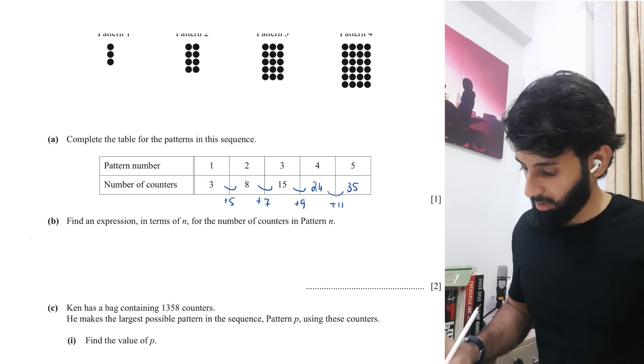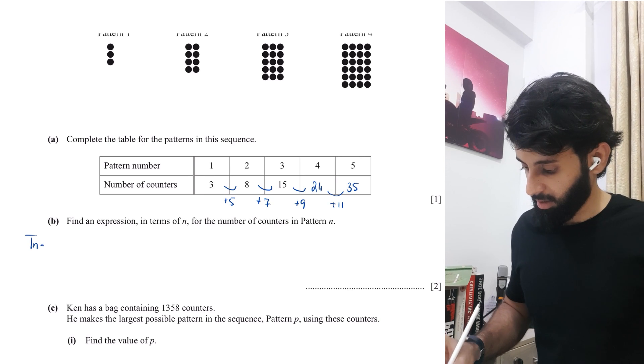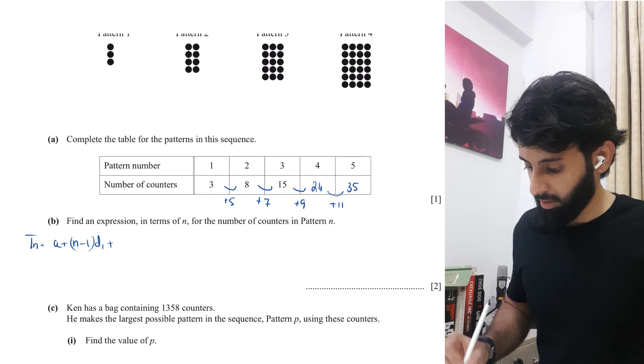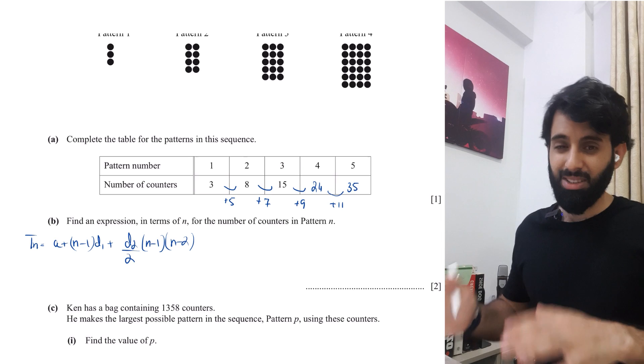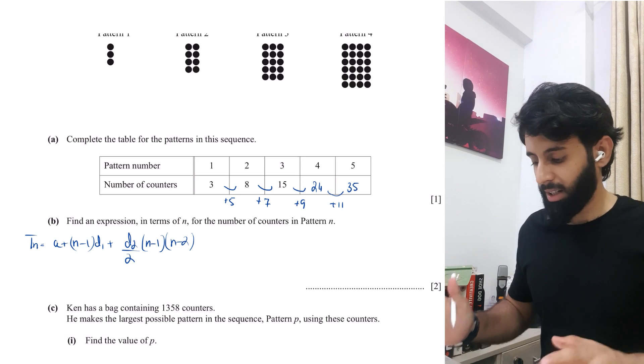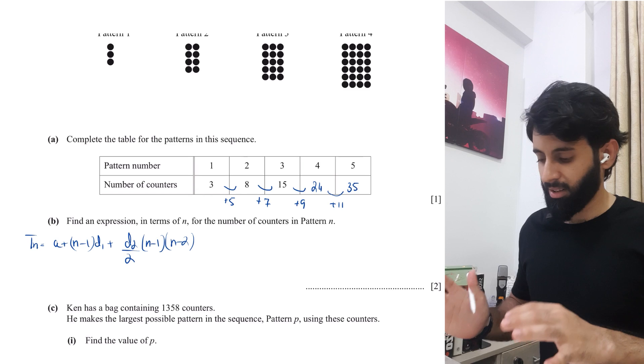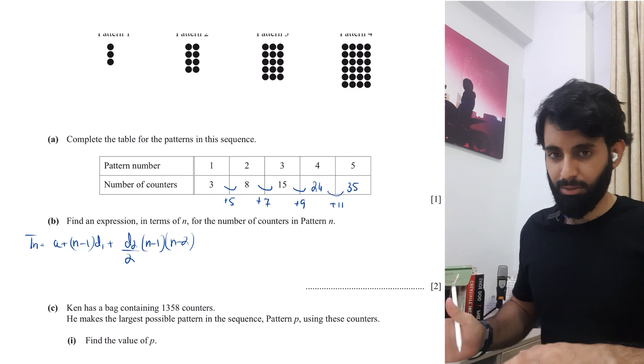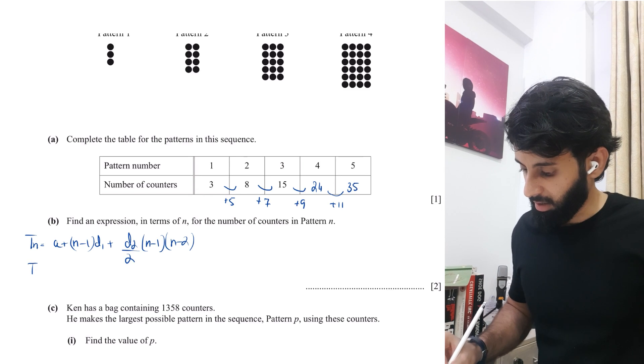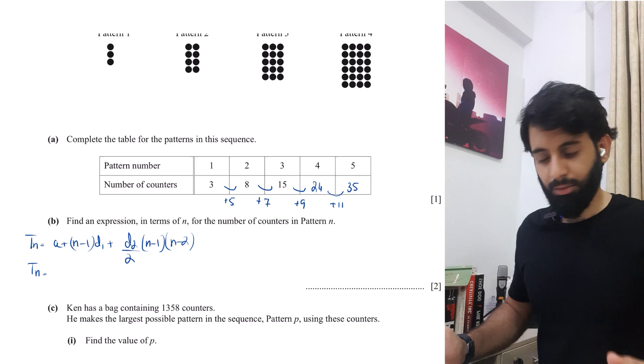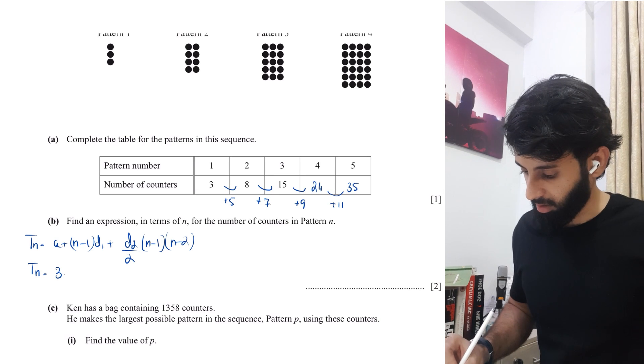Now, what exactly is the formula? The formula is as follows. TN is equals to A plus N minus one into D1 plus D2 upon two into N minus one into N minus two. Now, this formula is something that's kind of complex to remember. I personally don't encourage students to memorize a lot of things, but this is one of those things where it's best that you memorize this. So A here is the first term, which is three.